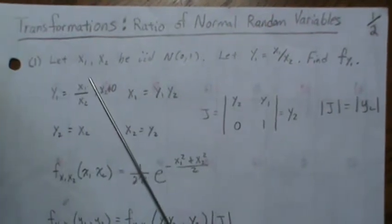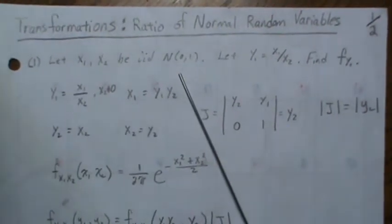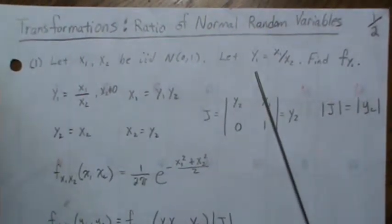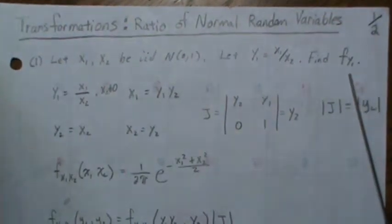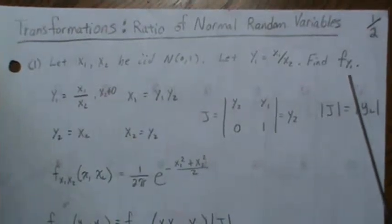Here X1 and X2 are IID normal random variables, and we're going to let Y1 be X1 divided by X2, and we want to find the density fY1.